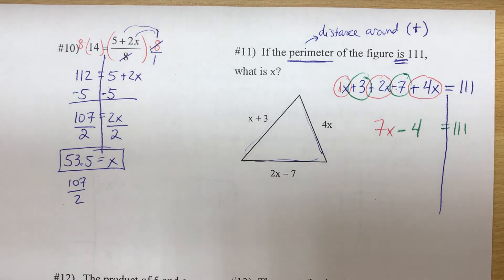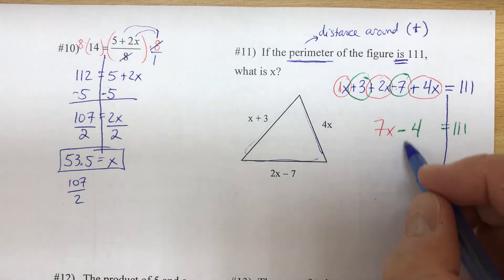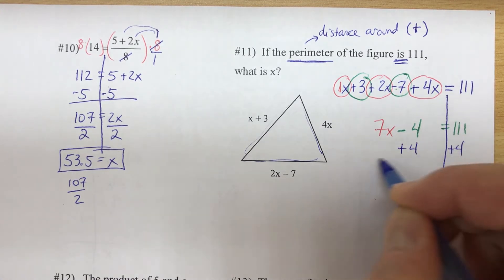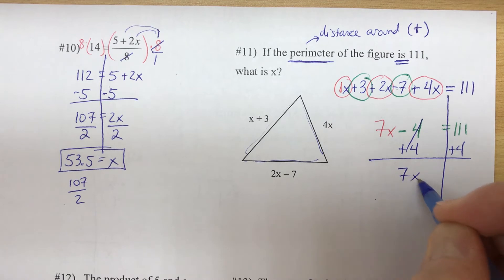Now we'll move the constant, we'll go plus, plus. So 7x equals 115, and then we'll divide by 7.